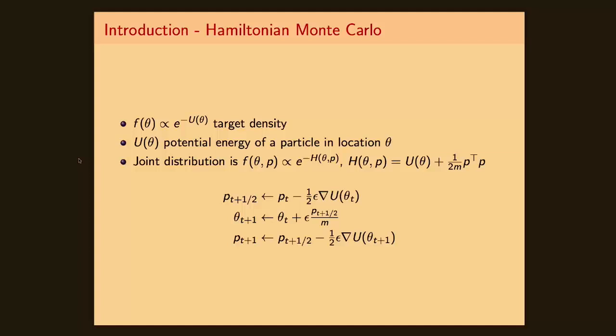Now, the standard Hamiltonian Monte Carlo setting leads to those leapfrog step equations, where you can see that the update over your parameter theta is given by epsilon times p divided by m, where this is the velocity of your particle.